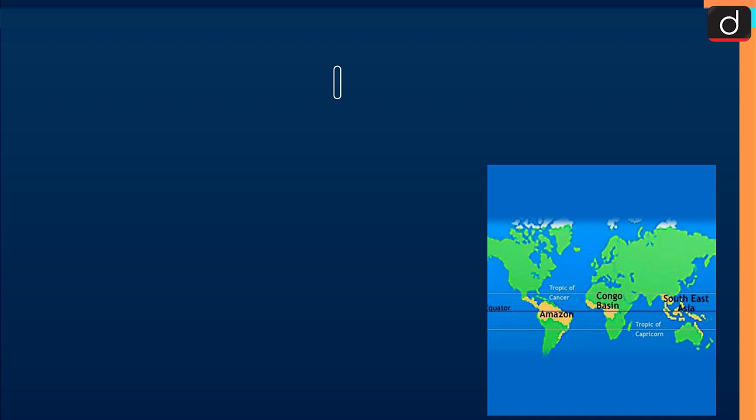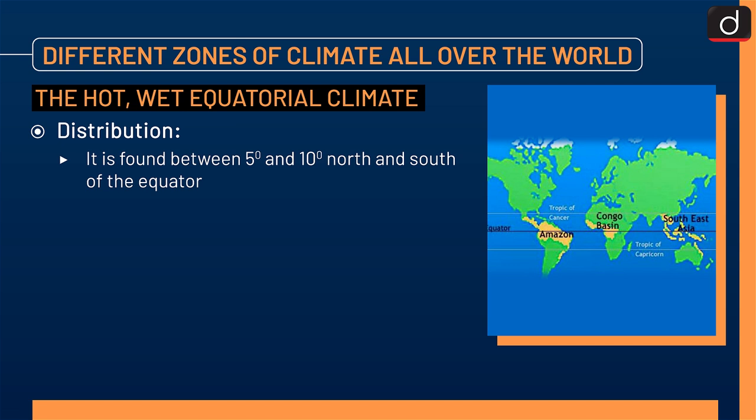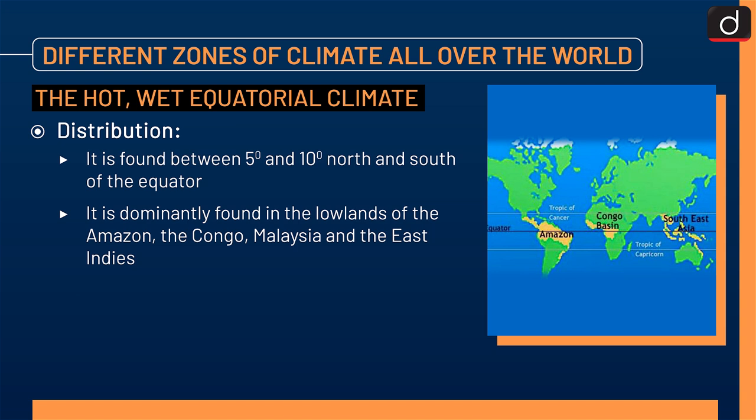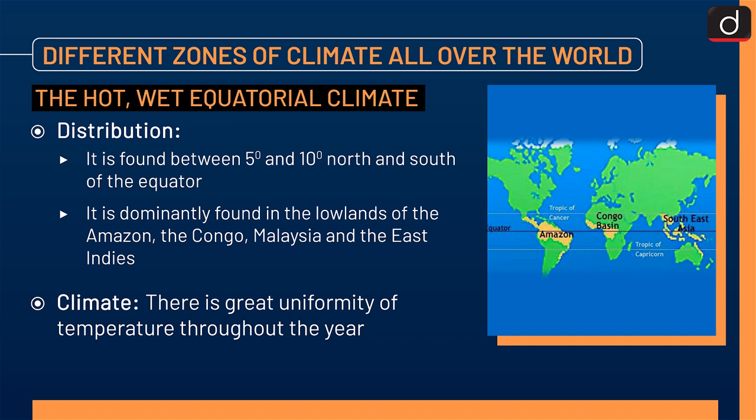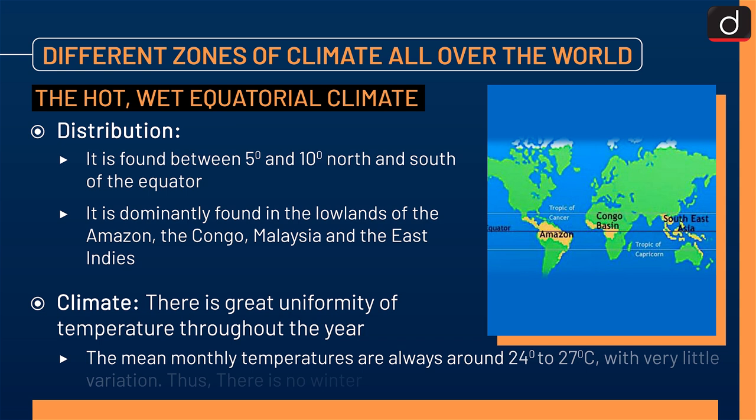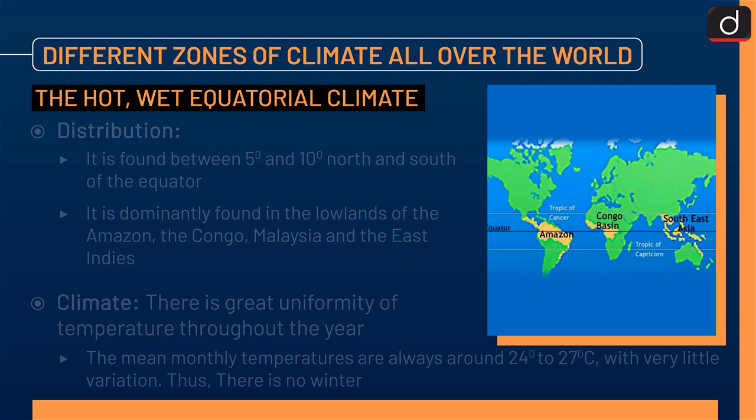First is the hot wet equatorial climate. Moving to the distribution first, it is found between 5 degrees and 10 degrees north and south of the equator. It is dominantly found in the low lands of the Amazon, the Congo, Malaysia and the East Indies. Regarding climate, there is great uniformity of temperature throughout the year. The mean monthly temperatures are always around 24 to 27 degrees Celsius with very little variation. Thus, there is no winter. The diurnal and annual range of temperature is small.